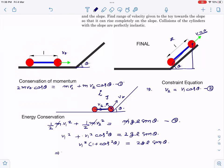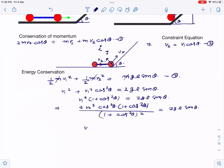When you substitute v₂ and v₁ values in terms of v₀, you get: 4 v₀ squared cos squared theta times one plus cos squared theta divided by one plus cos squared theta whole squared equals 2gl sin theta. In the final step, v₀ equals square root of gl sin theta times one plus cos squared theta divided by 2 cos squared theta. This completes our analysis.